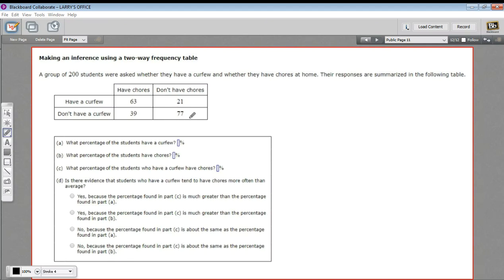One of the ways that a two-way frequency table is useful is that we can compare the numbers and make an inference about these groups of people. In this particular chart, we have 200 students who are asked, do you have a curfew or do you not have a curfew, and do you have to do chores or do you not have to do chores? And the results were pretty interesting.